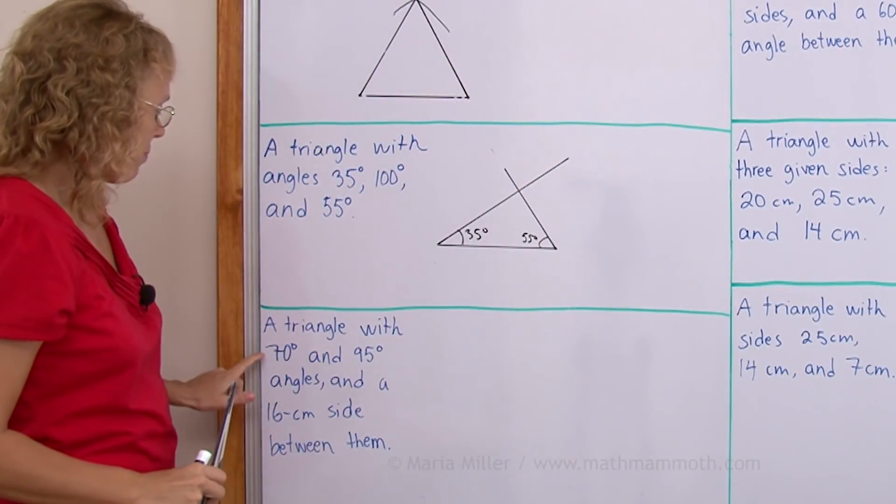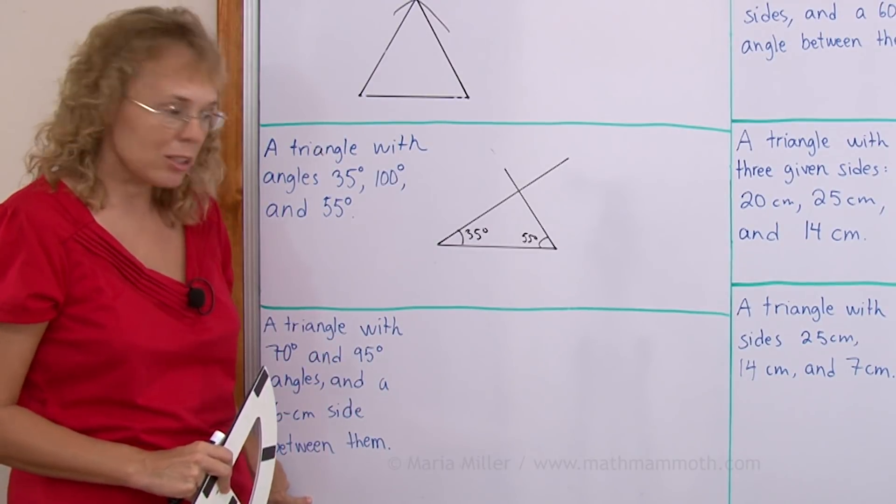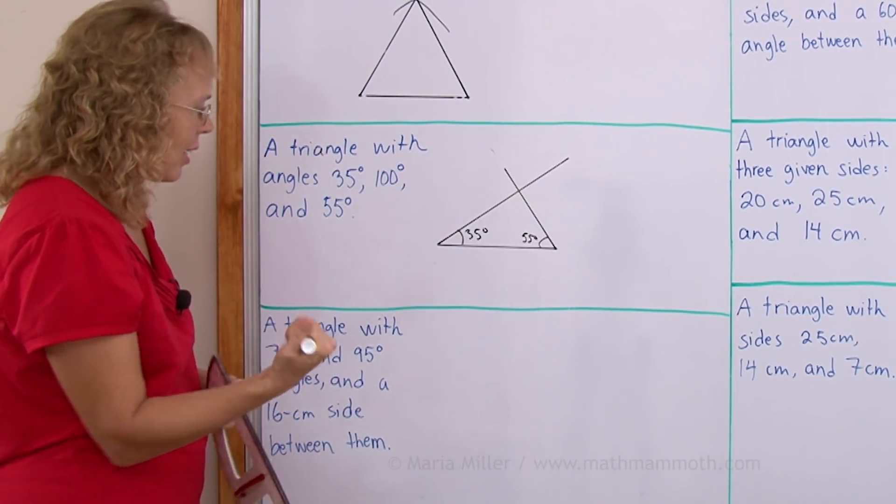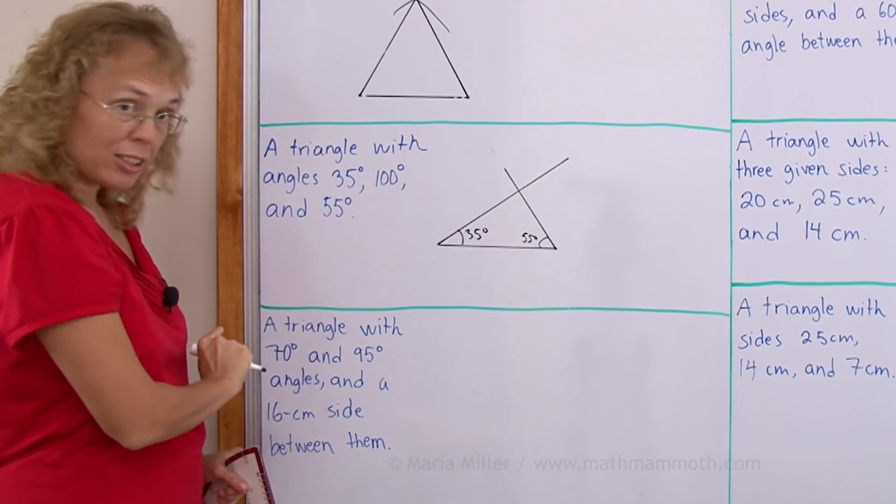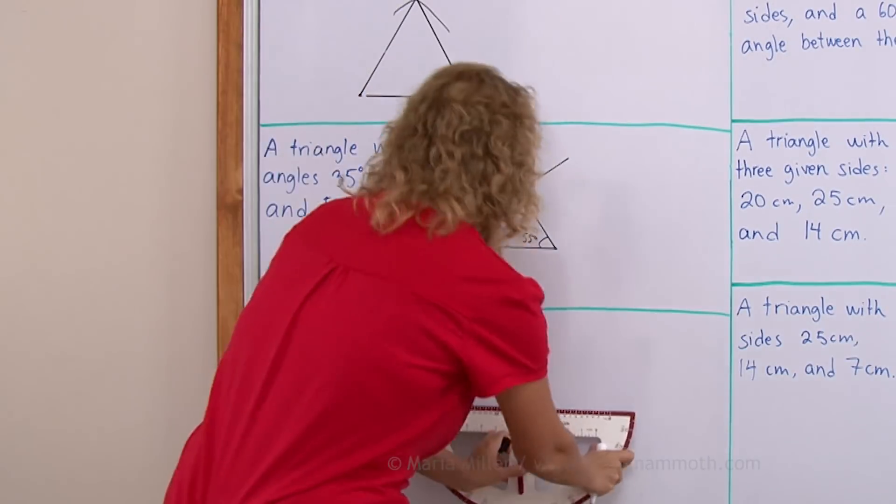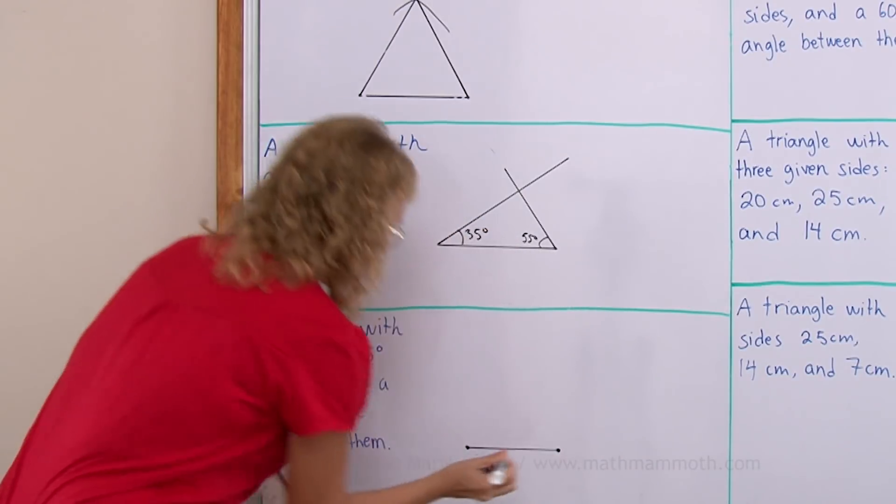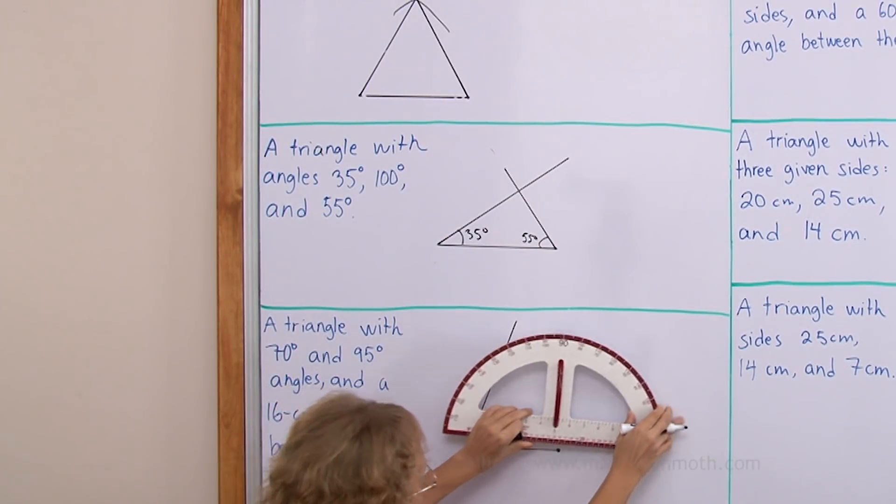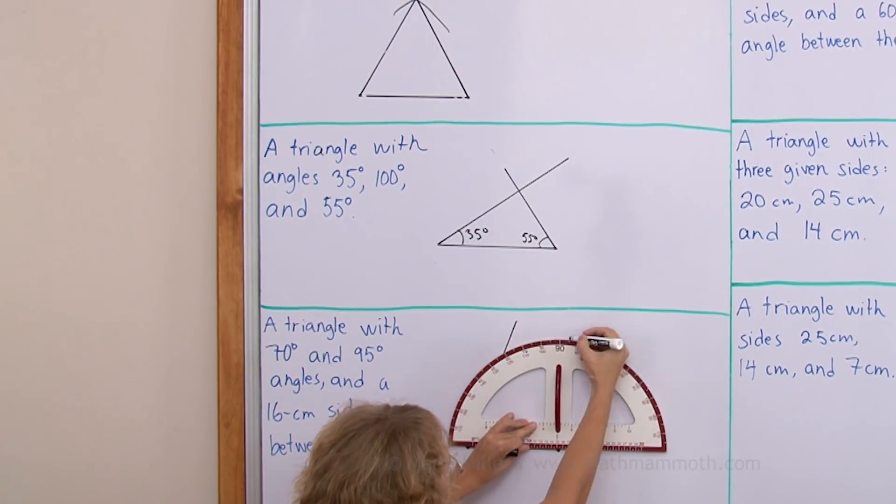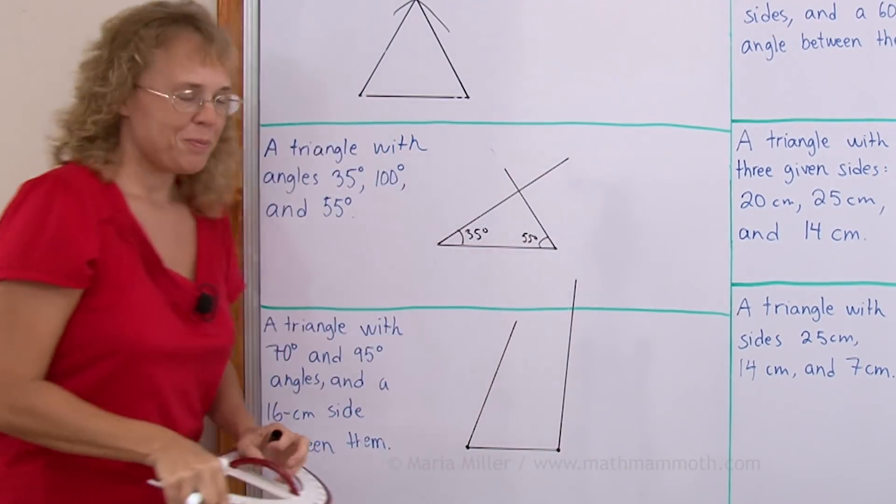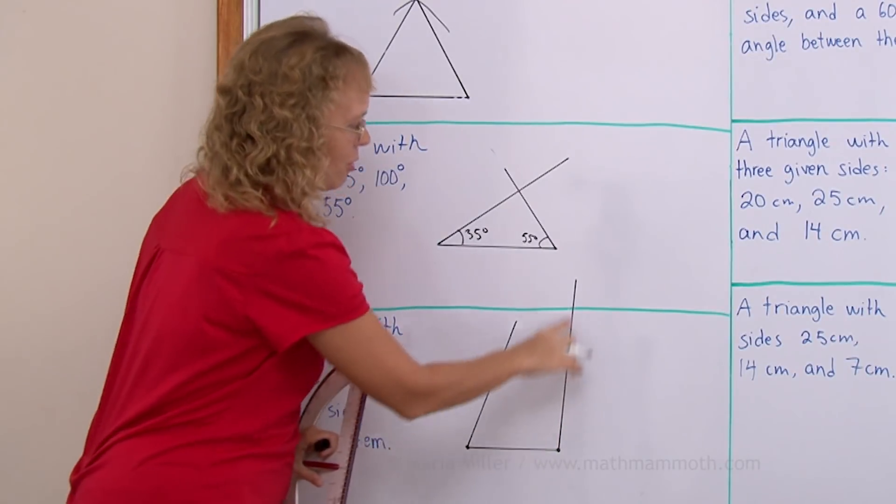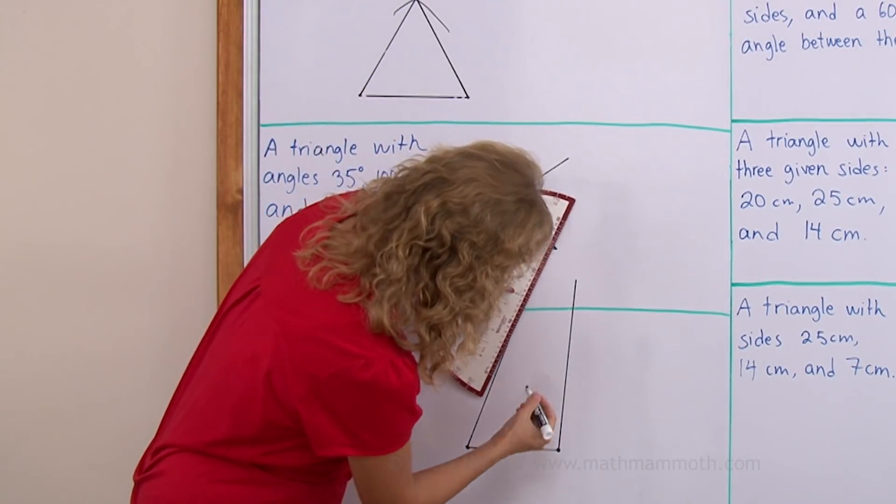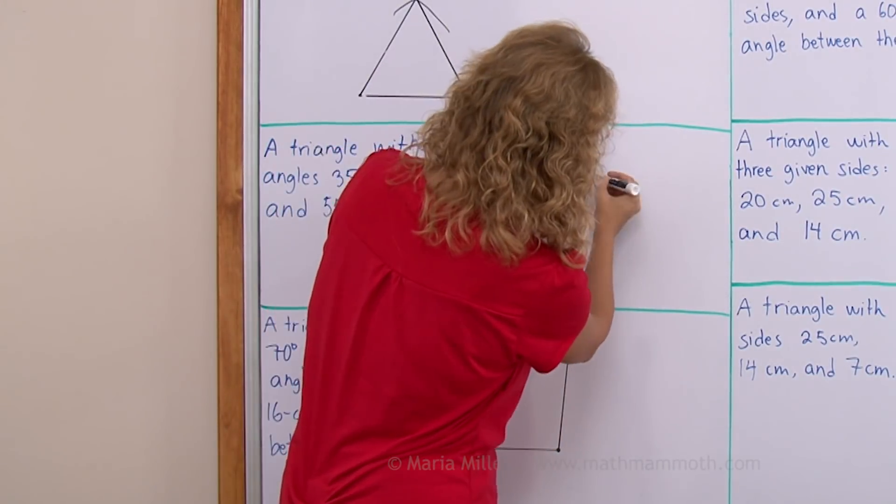A triangle with 70 degree and 95 degree angles and a 16 centimeter side between them. So this time we know two angles and a side between them. So let me start out by drawing the side right here and then drawing those two angles. 16 centimeters. And then 70 degree angle from here. And then 95 degree angle from this vertex. Now what happens is I have to continue these sides but eventually they will meet in one point. So let's do that.